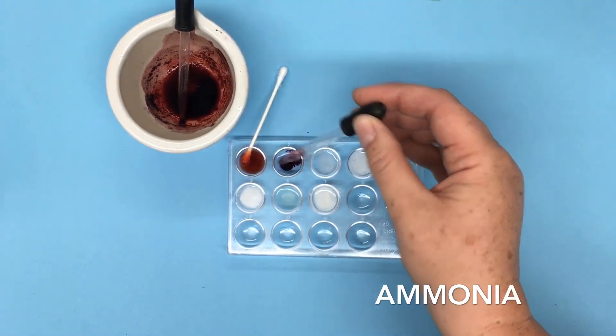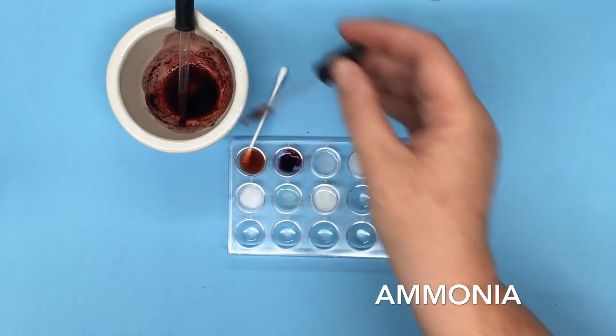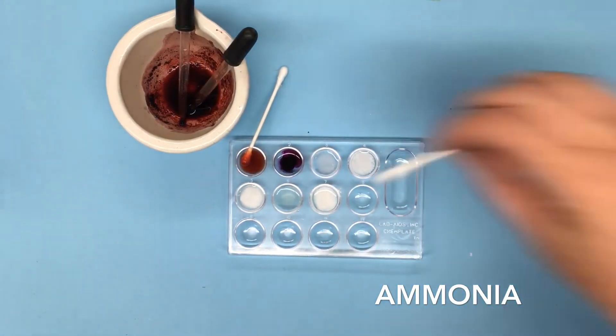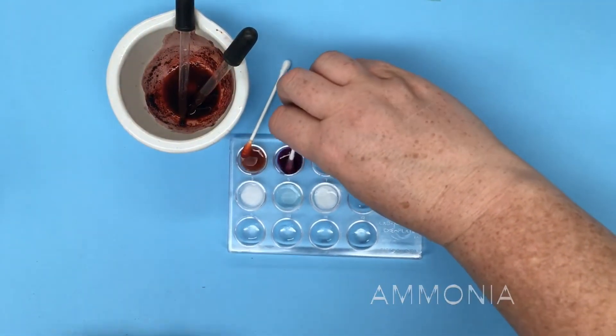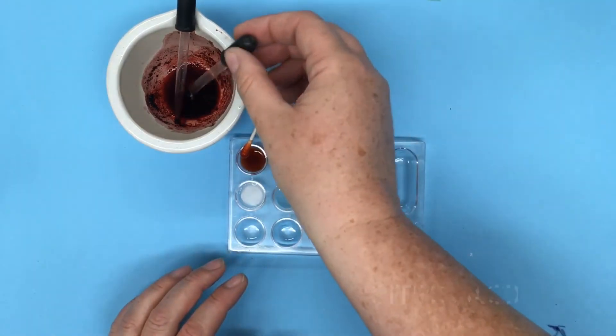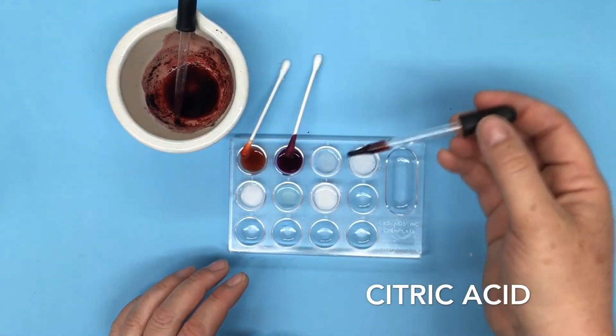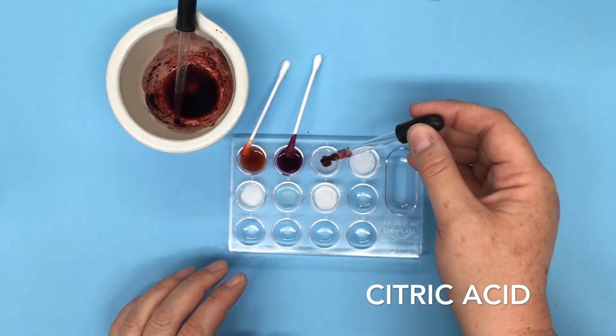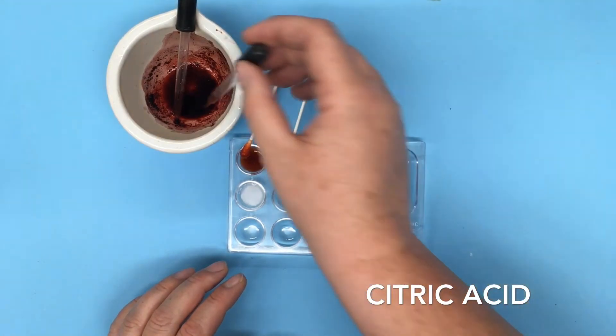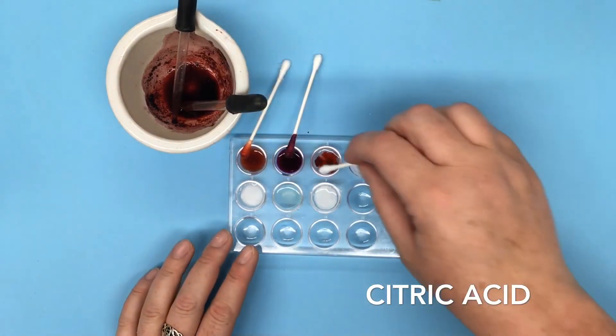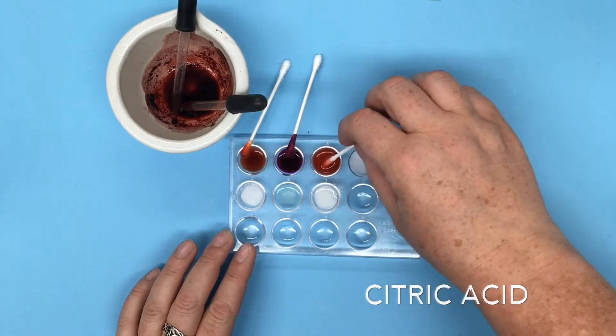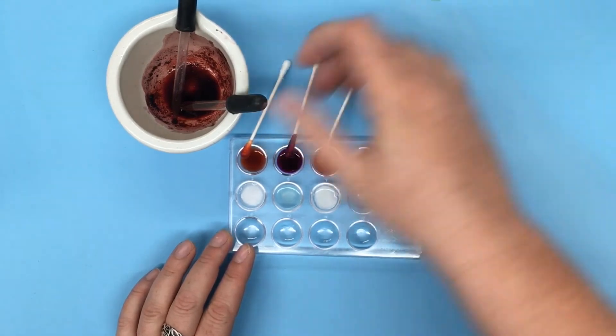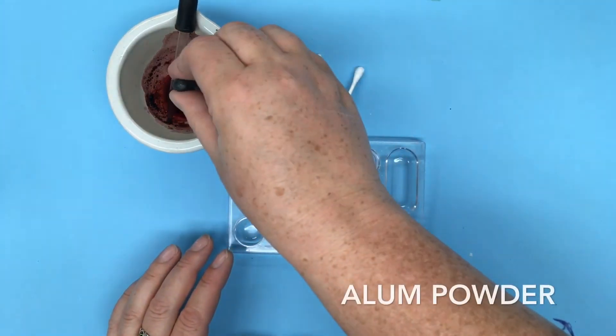Next we'll add it to our ammonia and our ammonia is giving us a deep deep purple. After our ammonia we had our citric acid, so that's again an acid and we get a similar color to our vinegar but not quite the same. Another orange there.